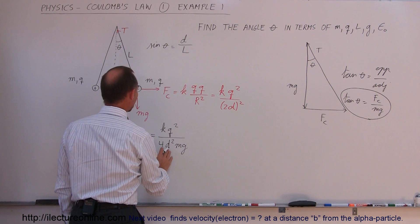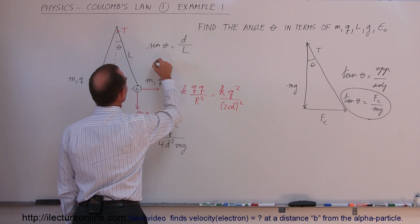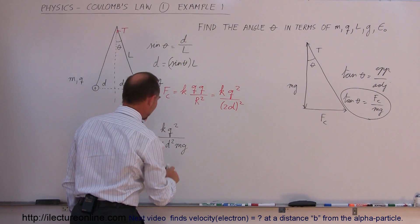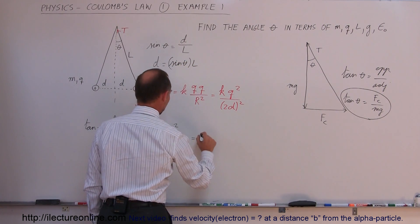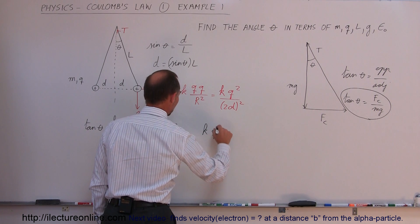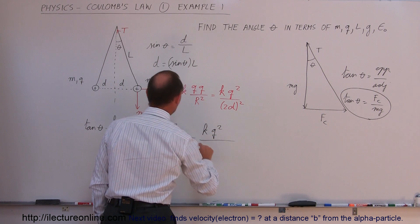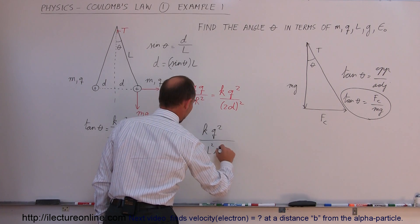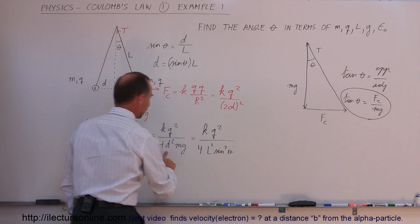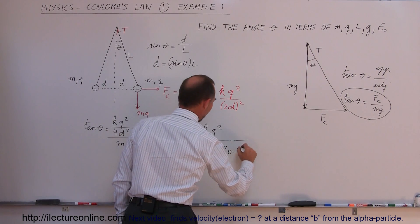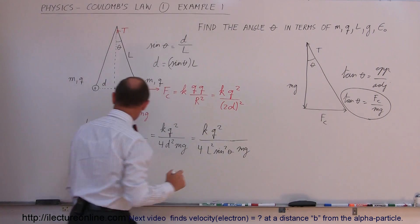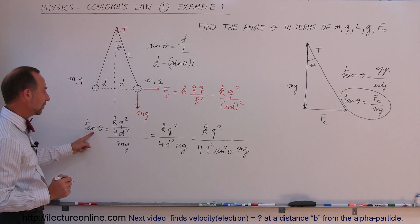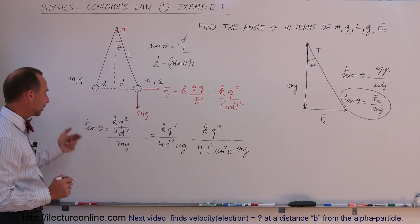We want to replace D. We can say D is equal to the sine of theta times L, or L times the sine of theta, which can go in here. This is equal to K times Q squared divided by 4, instead of D, I'm going to write L times the sine square of theta. Notice it was D squared, so it's L squared and sine theta squared times M and G.